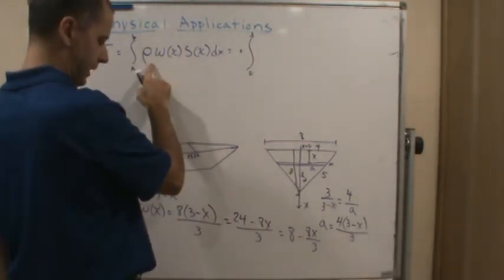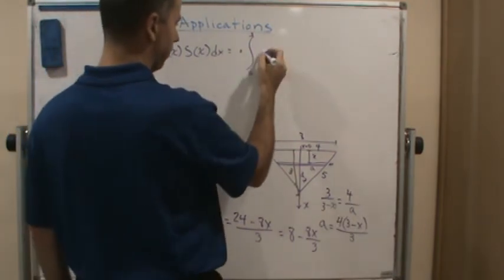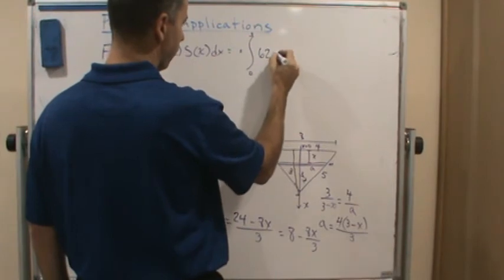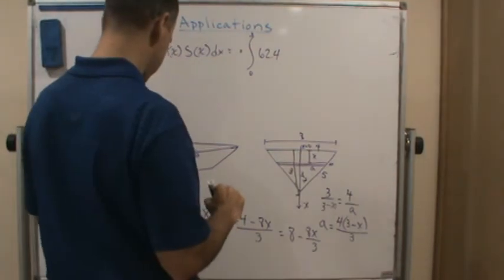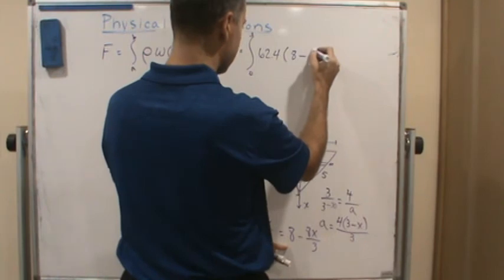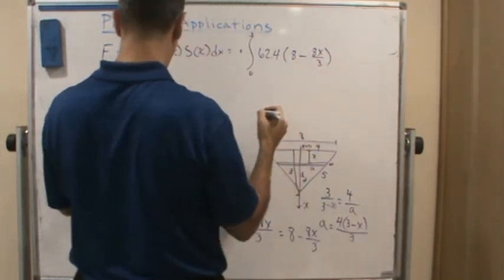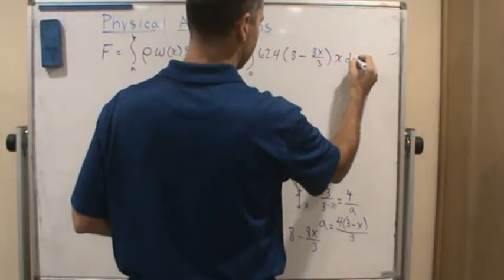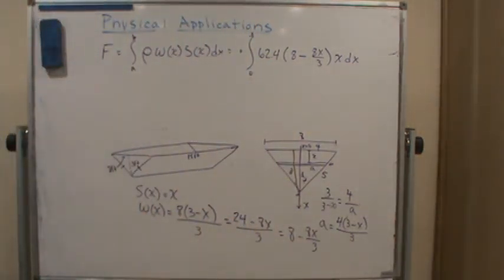So the weight density of water when you're dealing with feet is going to be 62.4. Okay? That's the number we want to use. And then W of x is just 8 minus 8x over 3, and then S of x is just x dx. And now we're ready to just calculate this thing.